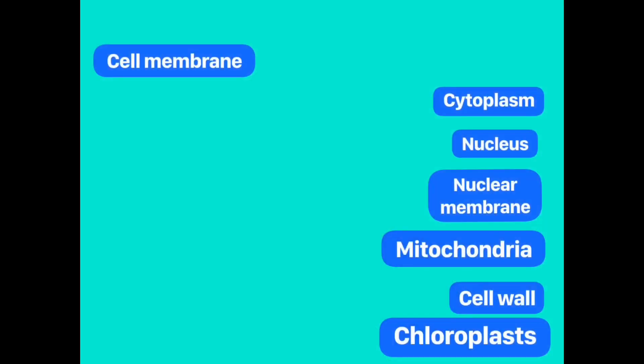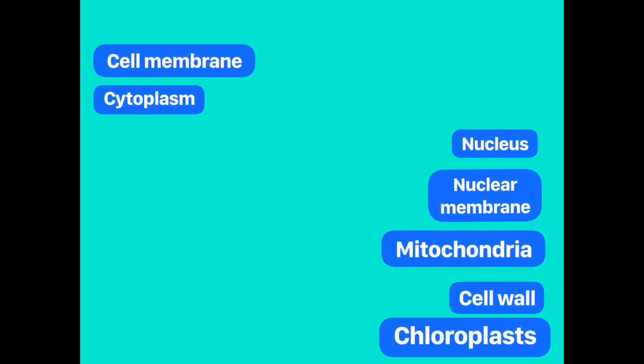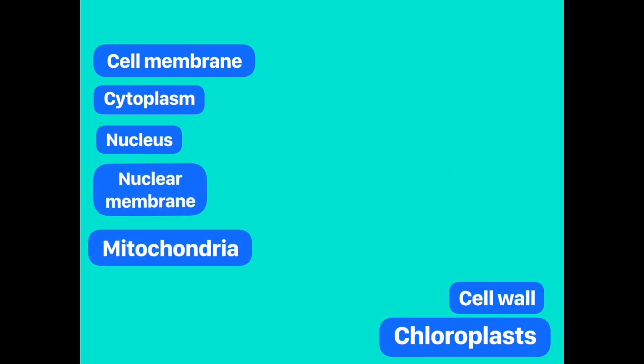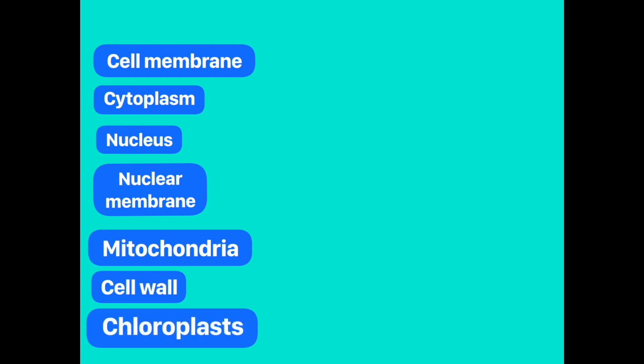So we know that all living things are made up of cells. But what are cells made of? There are seven basic parts of a cell: the cell membrane, the cytoplasm, the nucleus, the nuclear membrane, the mitochondria, the cell wall, and chloroplasts.